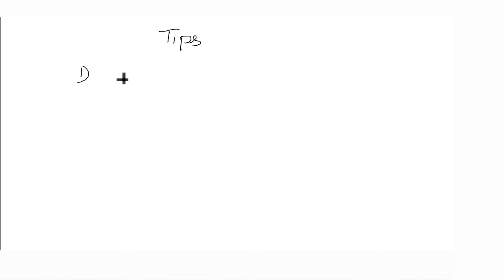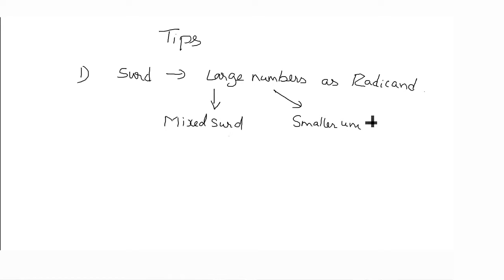Let us see some of the tips to solve multiplication and division of surds which are having large numbers as radicand. We can divide them in mixed surds or in smaller units. For example, 6250, or square root of 6250, I will write under root 625 into 10, which is 25 root of 10.